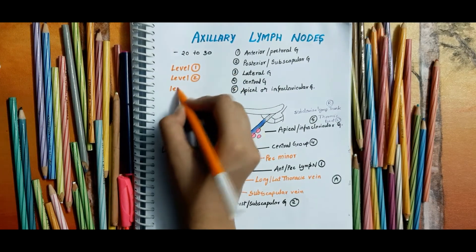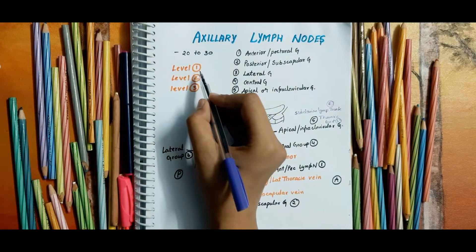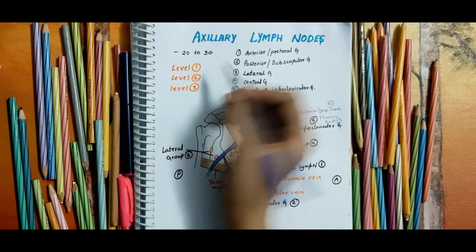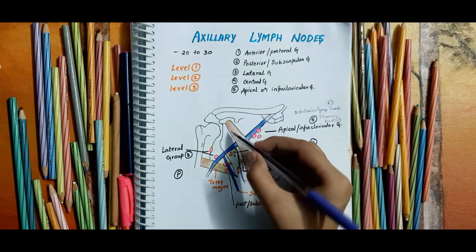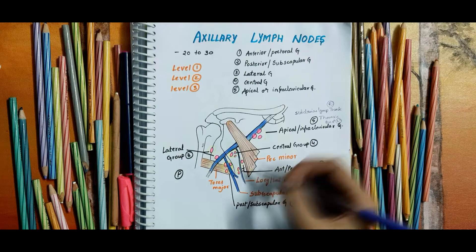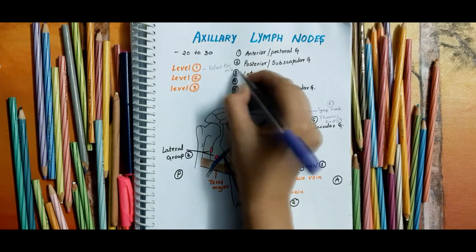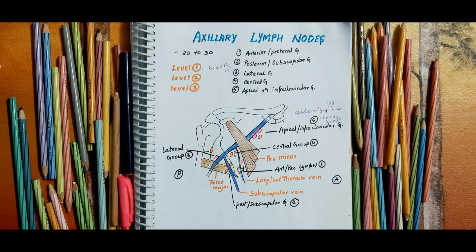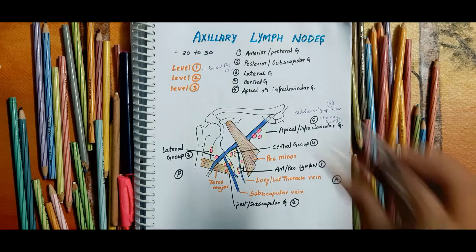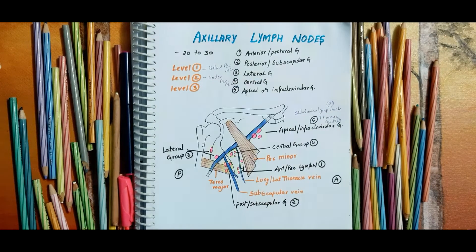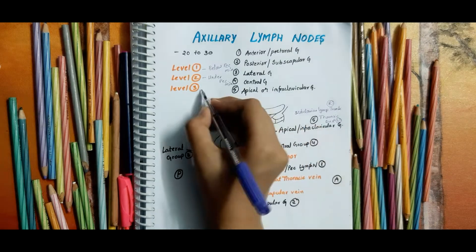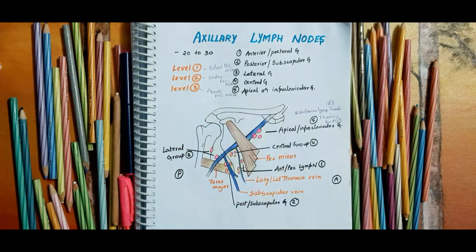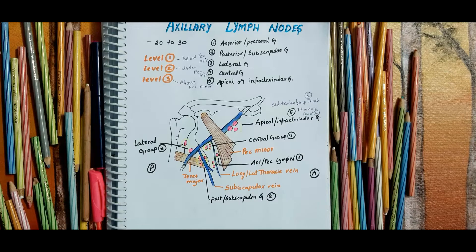The axillary lymph nodes are also described in terms of levels: level 1, level 2, and level 3. Level 1 is the bottom level, below the lower edge of the pectoralis minor muscle. Level 2 is underneath the pectoralis minor muscle, that is posterior. Level 3 is above the pectoralis minor muscle.